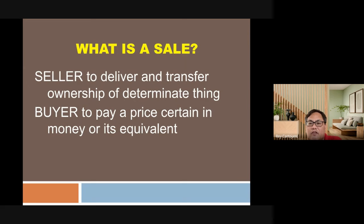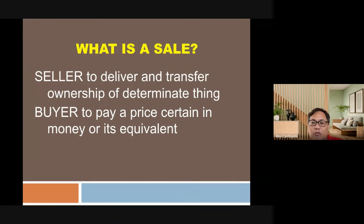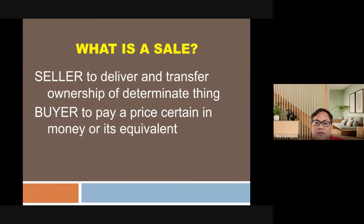In a contract of sale, the obligation of the seller is to deliver and transfer ownership of a determinate thing — this is a matter of law. Even if there is a contrary stipulation in the contract, the law states the obligation to transfer ownership is on the seller. The obligation of the buyer is to pay the price certain in money or its equivalent.